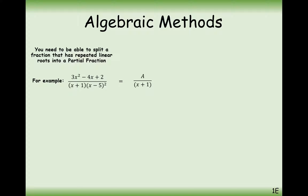This is how you do it. If you've got x plus 1 on the bottom, the standard is to write A over x plus 1. But when you've got x minus 5 squared, you need to have one term where x minus 5 is just on its own, and a second term where x minus 5 is being squared. Both of these two terms must be taken into account. If there was a third power on x minus 5, you would also need a third fraction with the third power of x minus 5 on it.